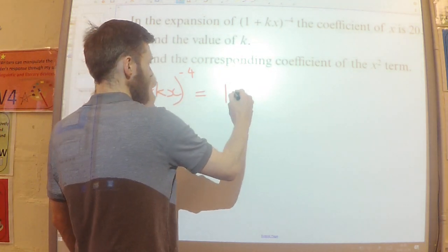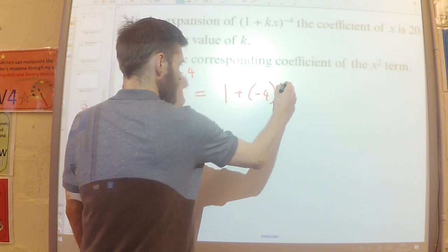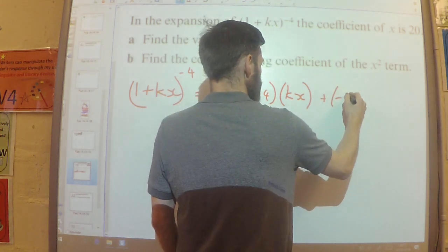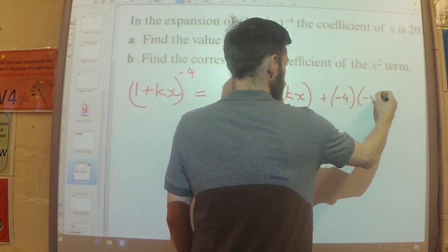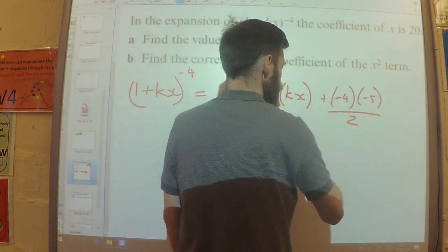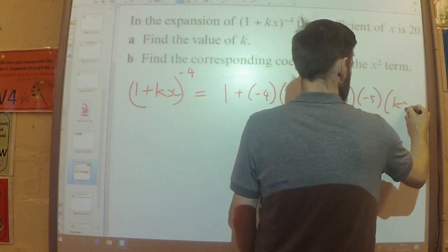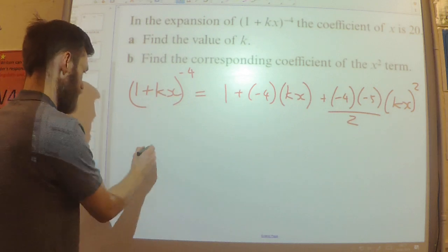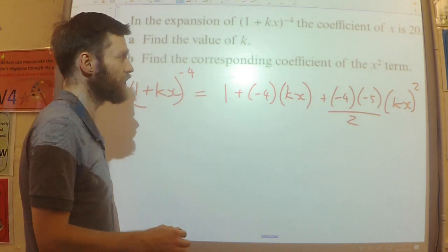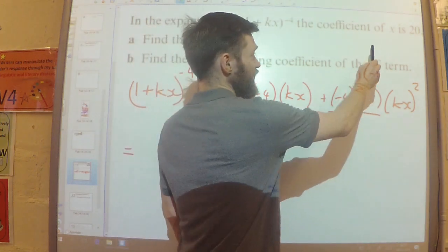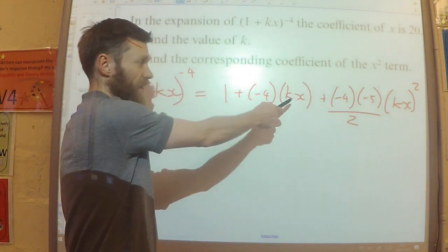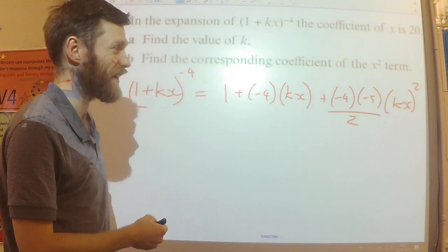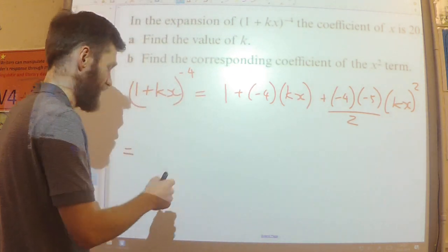So I've got 1 plus mx plus m times (n minus 1) over 2 factorial multiplied by (kx) squared. So I've just done the first three terms here. I only actually need the x term for part a of the question, but I can see that I'm going to need the x squared term for part b, so I've done all three terms here.